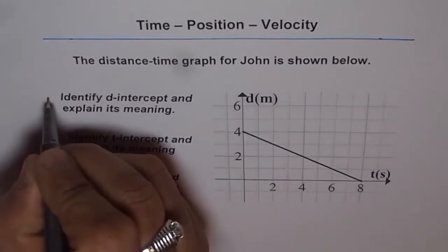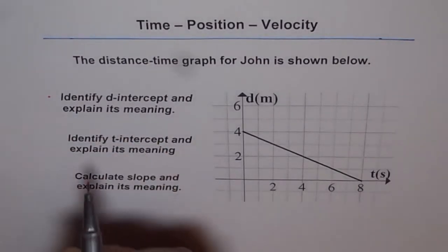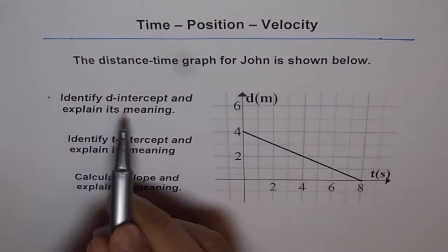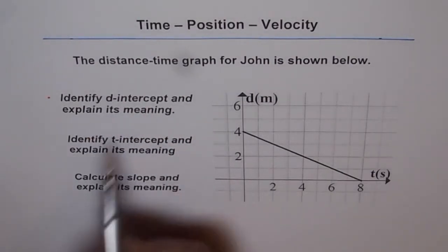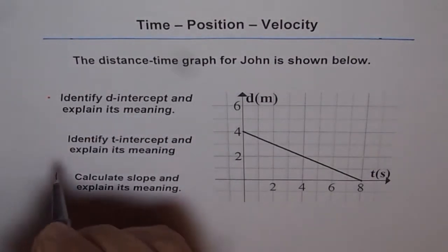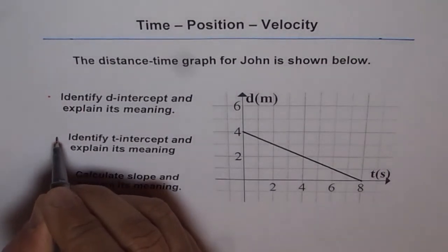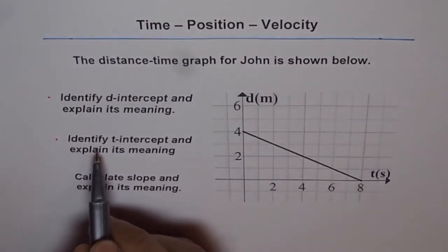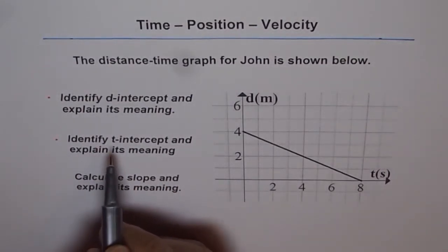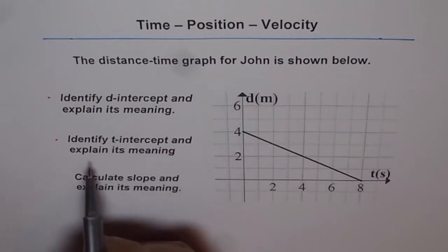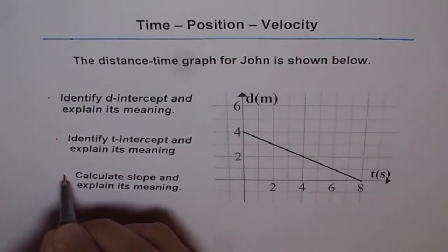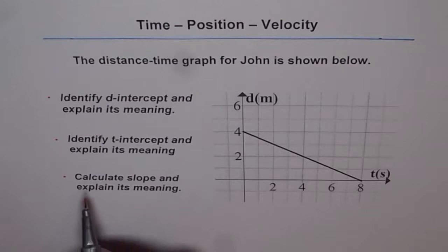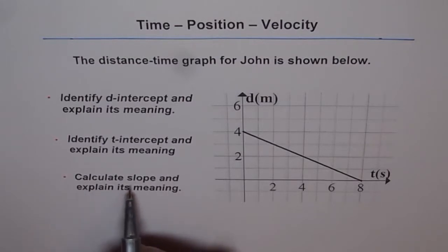The first question is: identify the d-intercept and explain its meaning. The next question is: identify the t-intercept and explain its meaning. And the last question is: calculate the slope and explain its meaning.